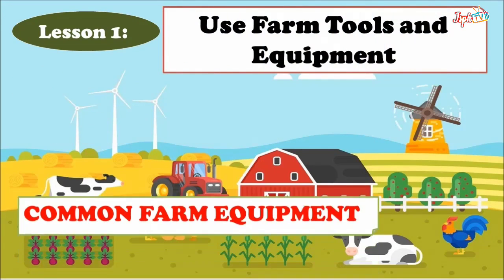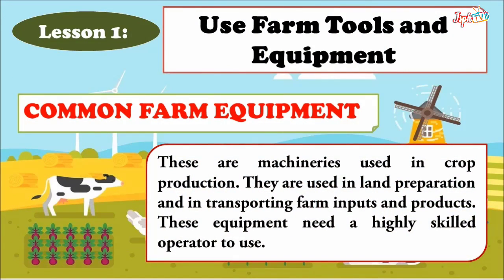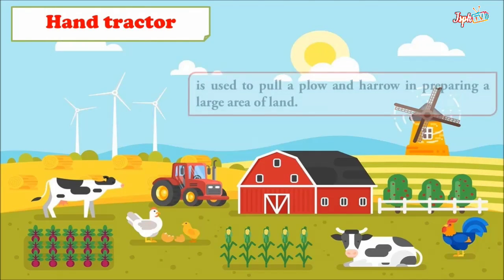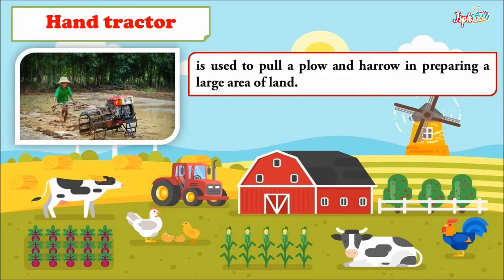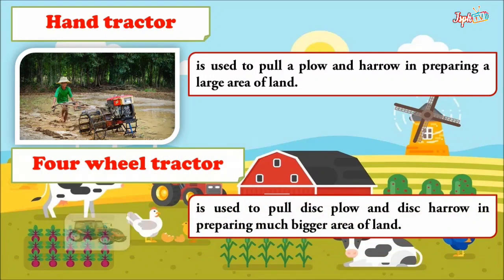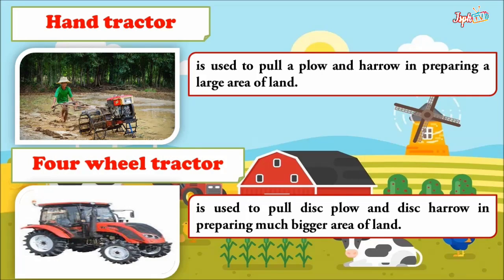Lastly, we have common farm equipment — machineries used in crop production for land preparation and transporting farm inputs and products. This equipment requires a highly skilled operator. The hand tractor is used to pull the plow and harrow in preparing a large area of land. The four-wheel tractor is used to pull the disc plow and disc harrow in preparing a much bigger area of land.